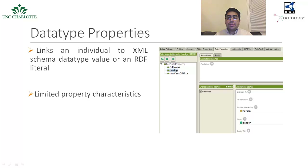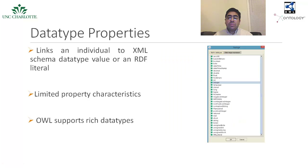Datatype properties link an individual to an XML schema datatype value or an RDF literal. In other words, they describe relationships between an individual and data values. Most of the property characteristics described for object properties cannot be used with datatype properties. As shown in the figure, a datatype property can only be defined as functional, which implies that the property can take at most one unique value as range. The property has age is defined as a functional property, and the range of the property is selected to be an integer value. OWL supports a rich variety of data types, such as URI, strings, numbers, and datetime variables.